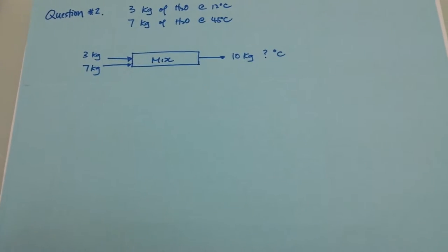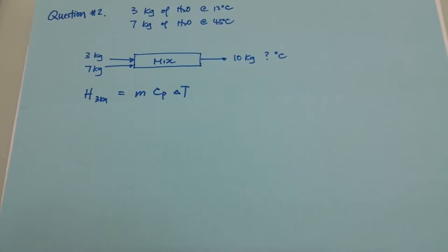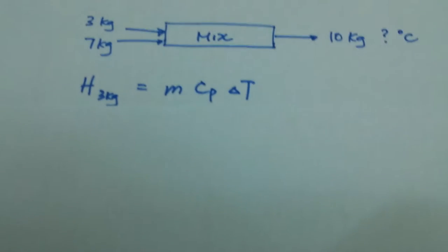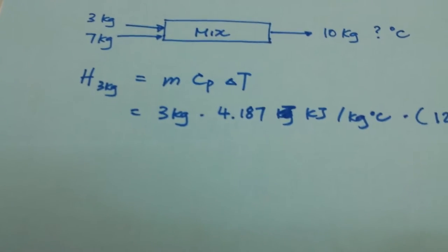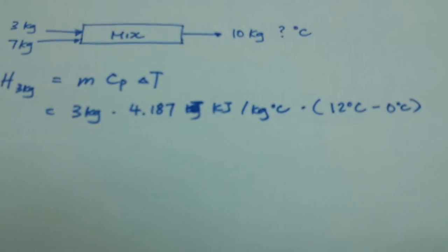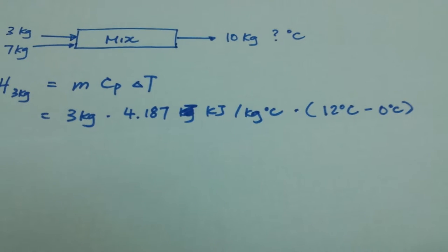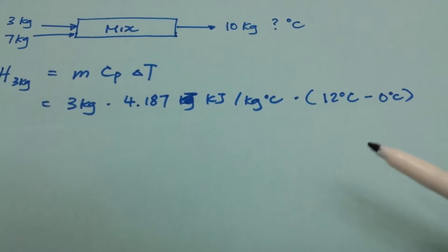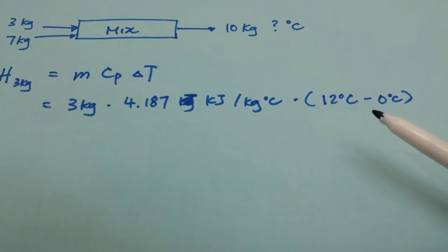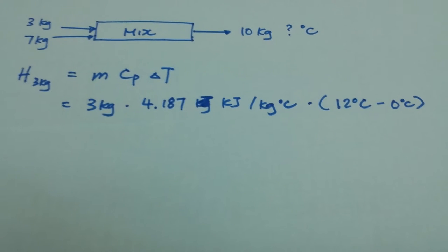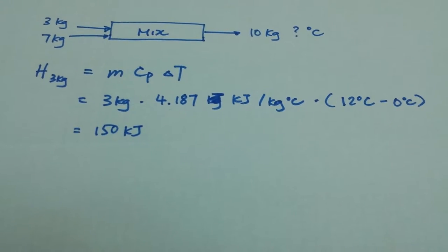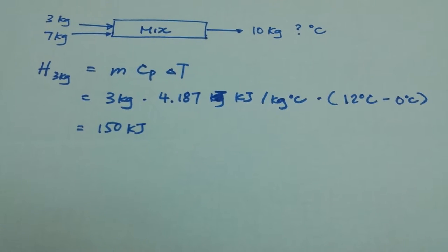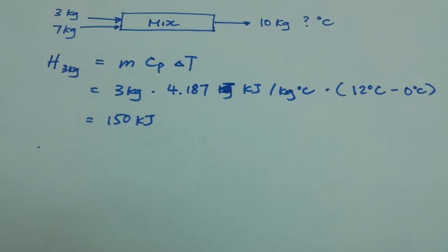I would like to find out the total enthalpy in that 3 kg of water first using this equation, making some mistake along the way. We are doing it in delta T here as relationship to degrees Celsius, 0 degrees Celsius, finding out that in that 3 kg of water, we have 150 kilojoules.